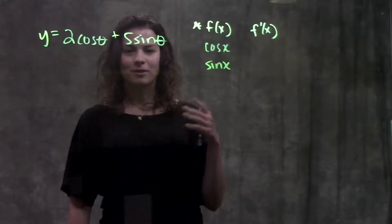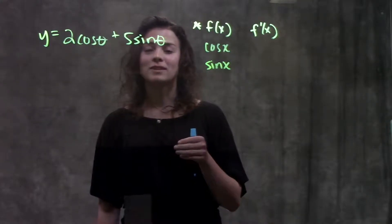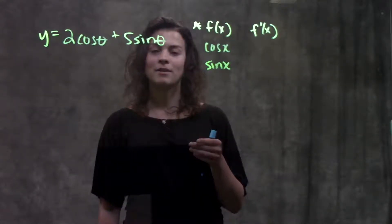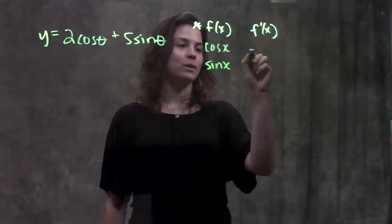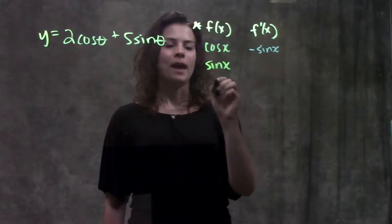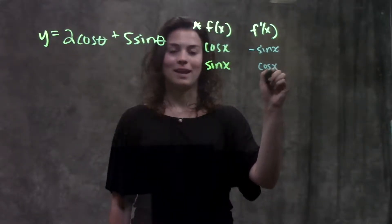Before we go through this example, let's first review what this section tells us. It gives us the rules for taking the derivatives of trig functions. The derivative of cosine x is always minus sine x, and the derivative of sine x is always cosine x.